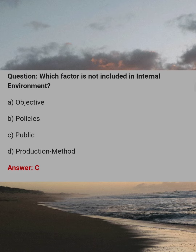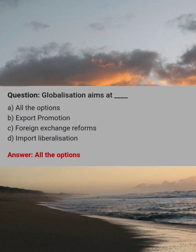Which factor is not included in internal environment? Answer: C, public. Globalization aims at dash. Answer: A, all the options.